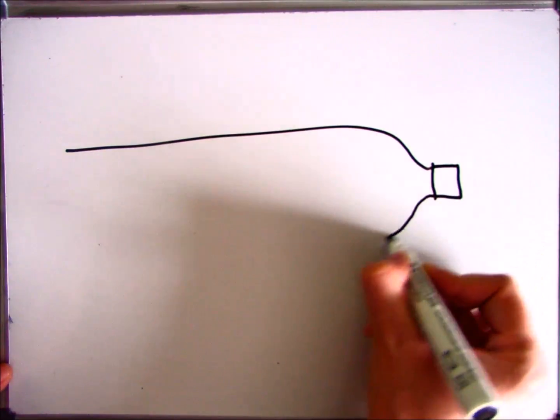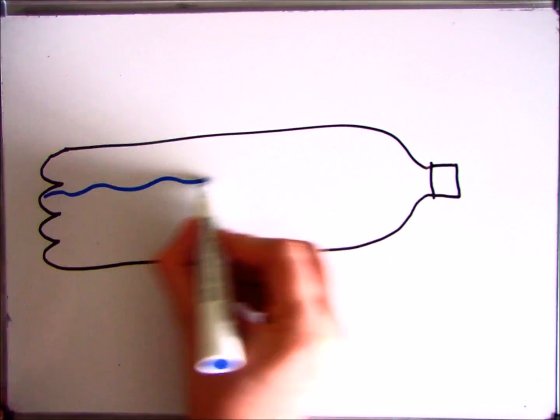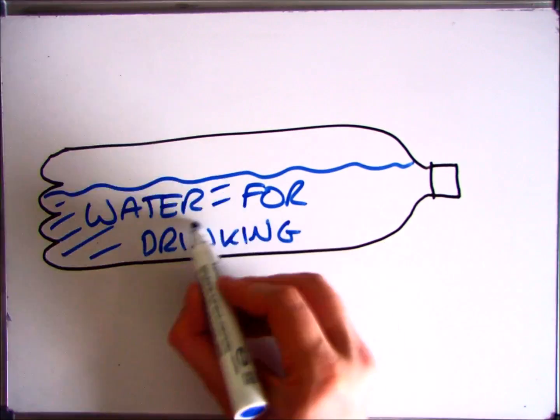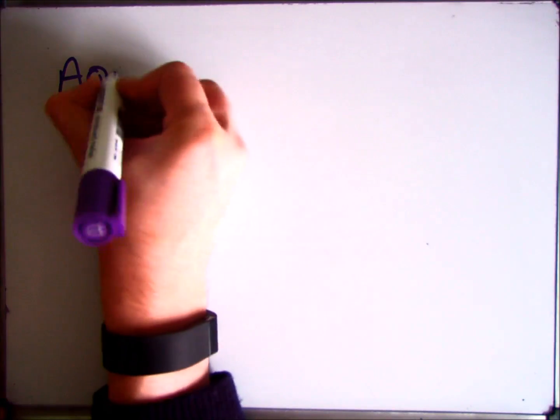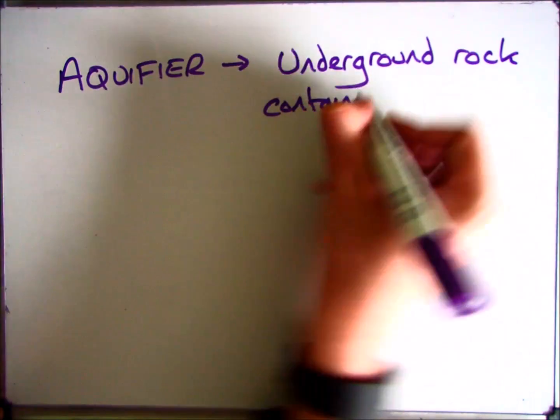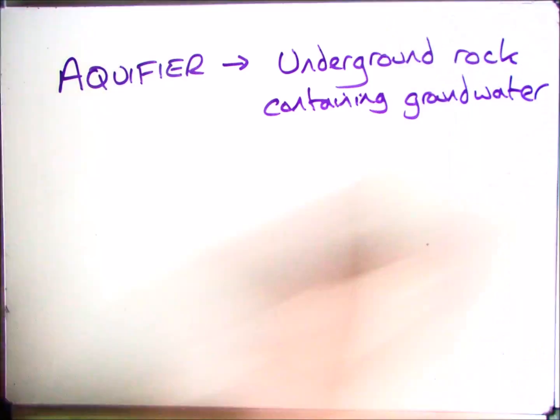The final section of this video is going to focus on how we can get drinking water from underground lakes and streams. There are three key words that you need to know to help you with this section. The first one is aquifer, which is an underground rock containing the water, groundwater.